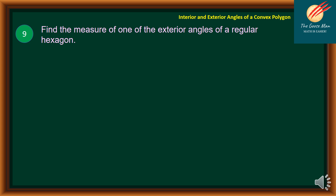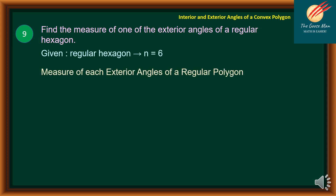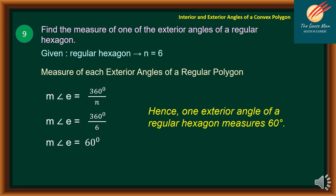Problem 9: Find the measure of one exterior angle of a regular hexagon. A regular hexagon has 6 sides, so N equals 6. Using the formula 360 divided by N: 360 divided by 6 equals 60. Therefore, one exterior angle of a regular hexagon equals 60 degrees. That ends our topic on interior and exterior angles of convex polygons.